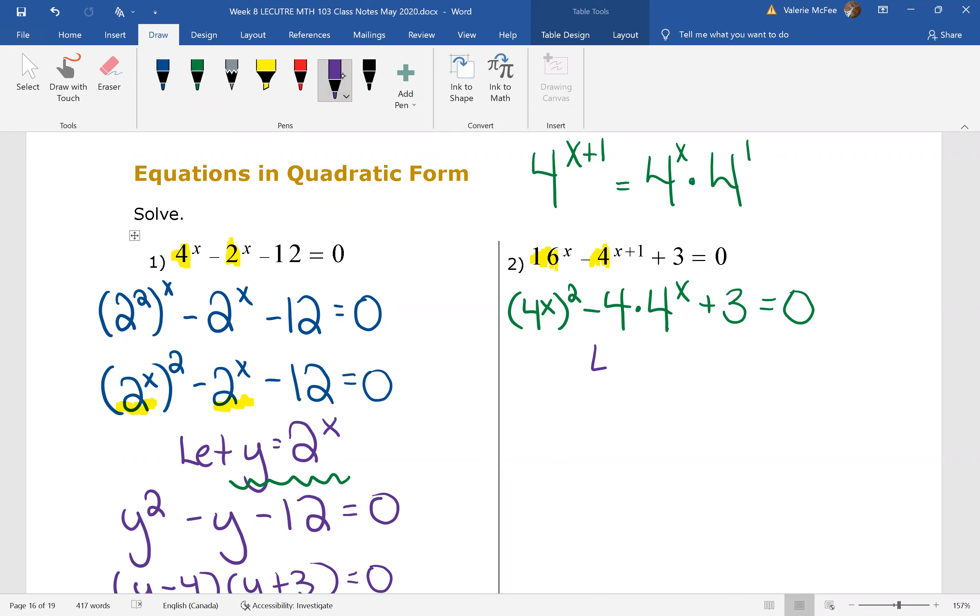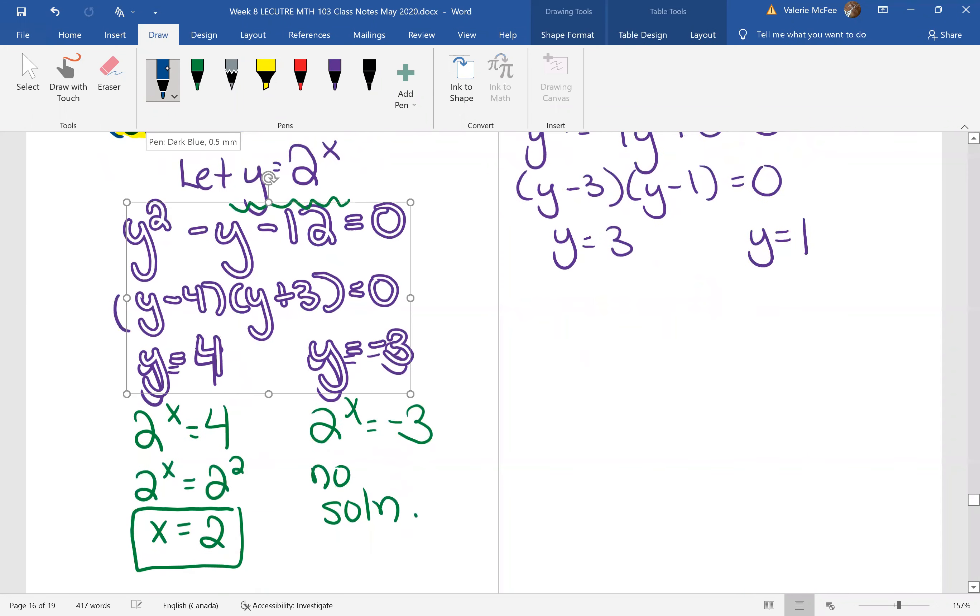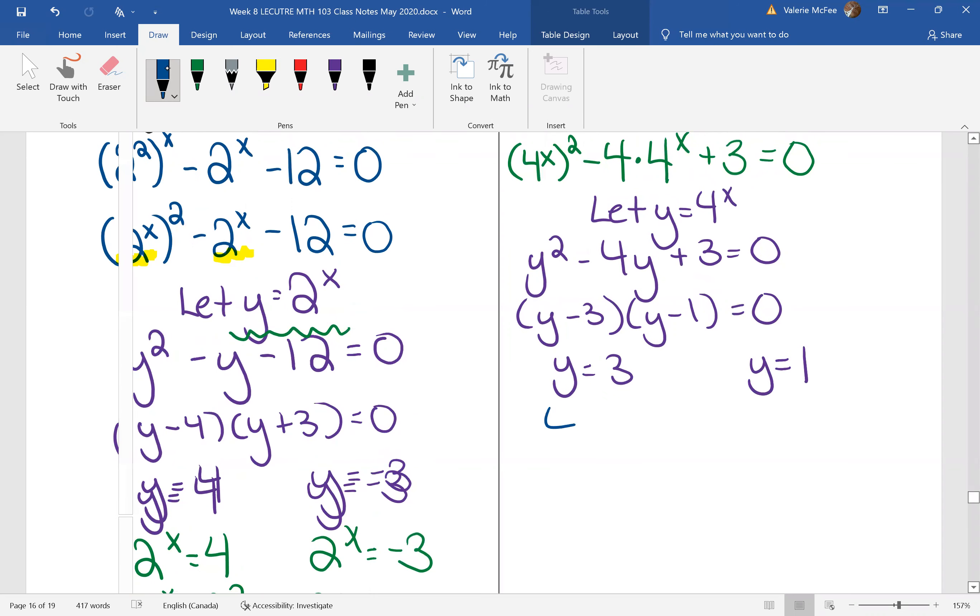And now we can let y equal 4 to the power of x. Why don't you go ahead and solve that? You found two answers for y. And so we know we have to substitute back. 4 to the power of x equals 3. 4 to the power of x equals 1.